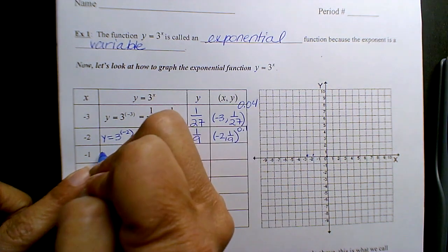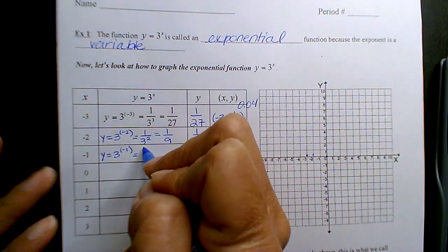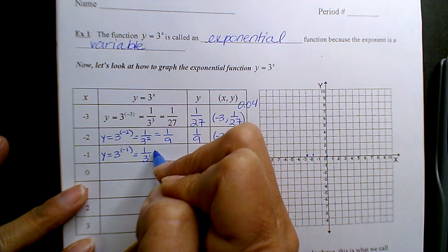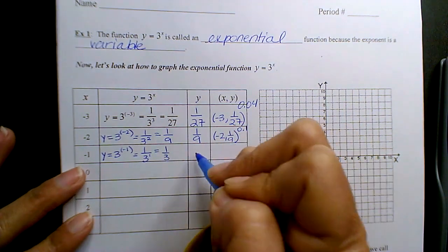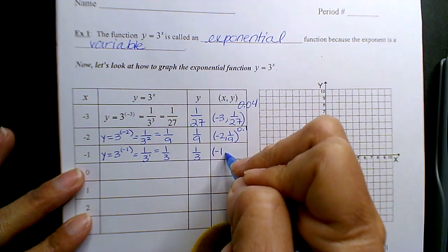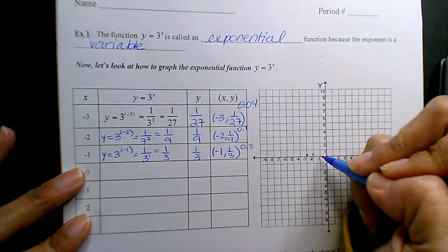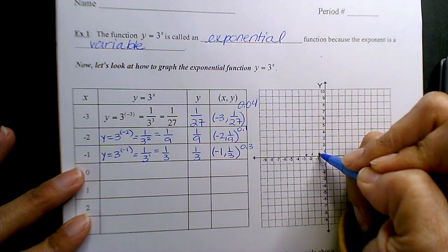Negative 1. You substitute 3 to the negative 1. Again, negative exponent or reciprocal property, 1 over 3 to the 1, which is 1 third. So 1 third - I know there's a lot of redundancy here - or 0.3. So then negative 1, 0.3 is a little higher.